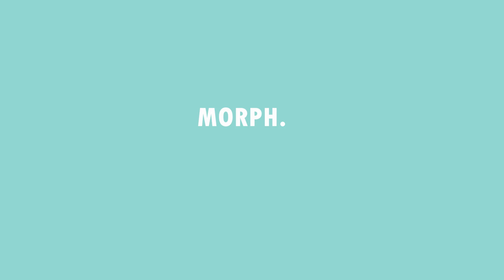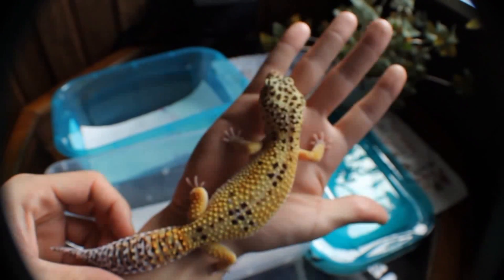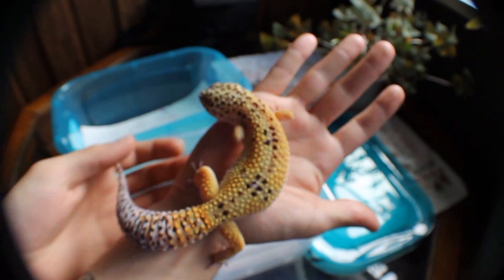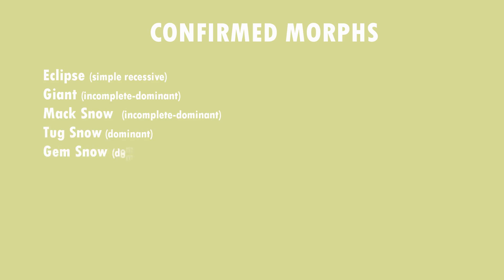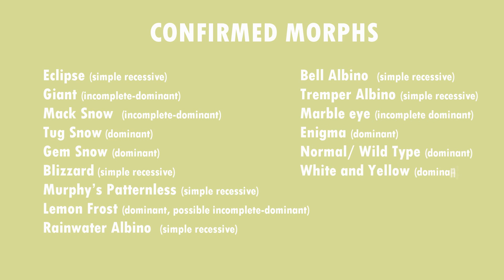Now let's look at a term you may be more familiar with: morph. Some people mistake the term morph with just something you name a phenotype — whatever the gecko looks like on the outside — but this isn't completely true since there are only really about 15 confirmed morphs: Eclipse, Giant, Mac Snow, Tug Snow, Gem Snow, Blizzard, Murphy's Patternless, Rainwater Albino, Bell Albino, Tremper Albino, Lemon Frost, Marble Eye, Enigma, Normal or Wild Type, and White and Yellow.